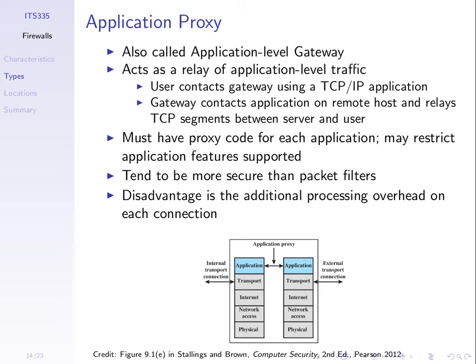The main problem with an application-level proxy is that the firewall must understand the specific application-level protocol, like HTTP. It only works for HTTP — it doesn't work for SecureShell, game applications, or the many other thousands of applications. Application-level proxies are usually specific to one type of application like web browsing; for email you need a separate proxy. So they only work for specific uses, but for those particular uses can be more secure.